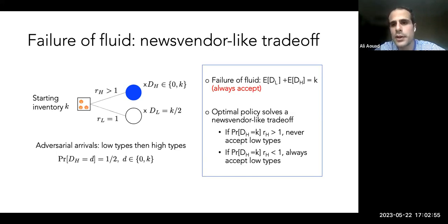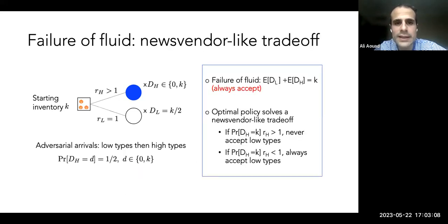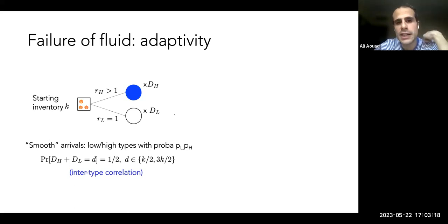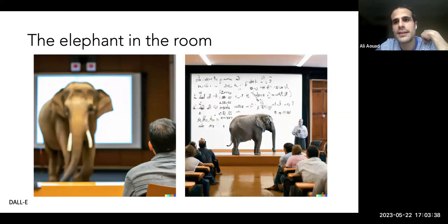What's missing is a news vendor-like tradeoff: uncertainty will be realized in the future, so we may want to hold capacity more aggressively than fluid prescribes. There's another form of failure — adaptivity: if demand is correlated, I may want to wait and learn more precisely what the demand realization will be. Fluid doesn't capture this either. This is the elephant in the room — a surprisingly simple but improperly handled issue within the classical model.